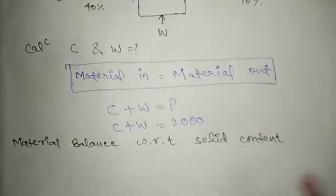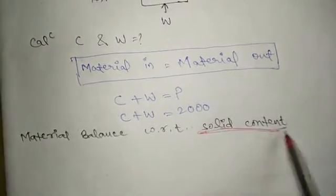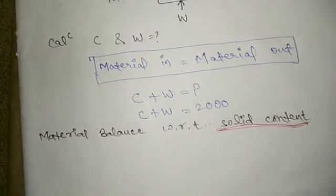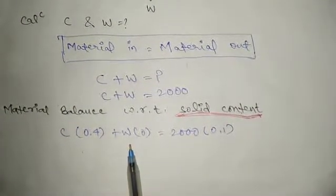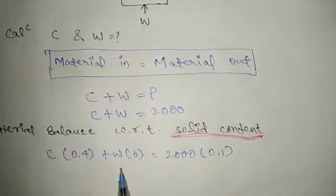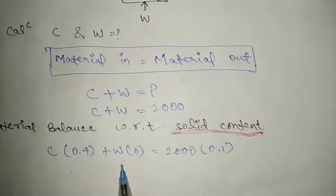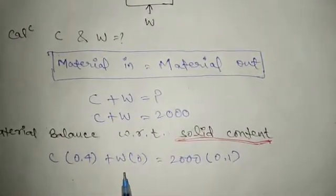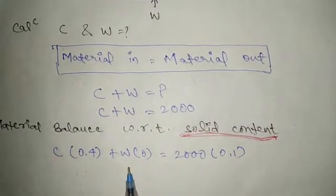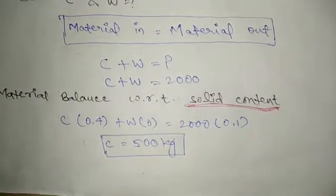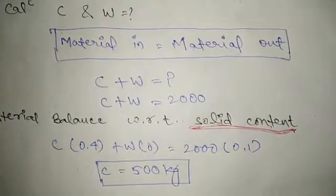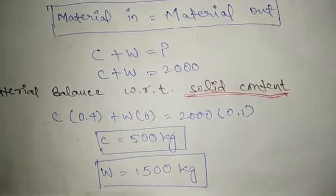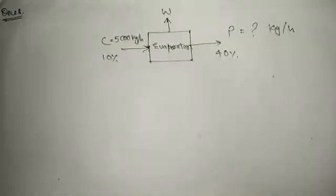Now writing the material balance equation with respect to solid content — the solid content is the concentration, the amount of solid present in a solution. The concentration of C is 40 percent (0.4), the concentration of water is always zero, and the concentration of the product (2,000 kg) is 10 percent (0.1). Solving this equation gives C = 500 kilograms. Putting this into C + W = 2,000 gives W = 1,500 kilograms.